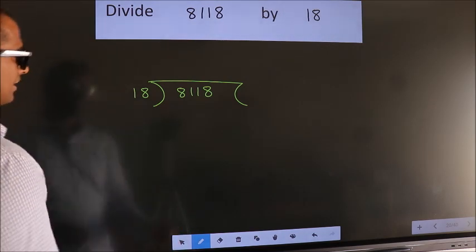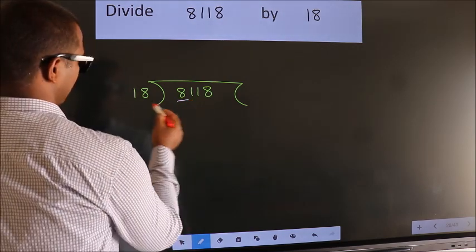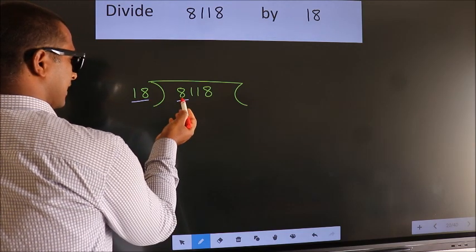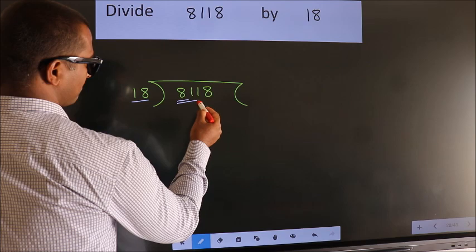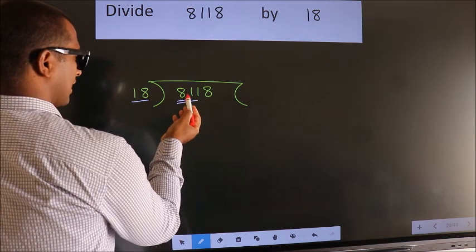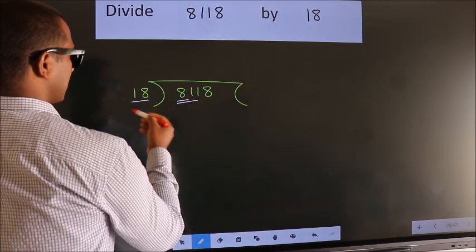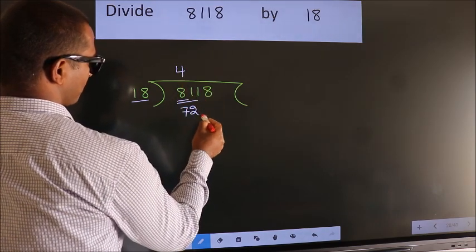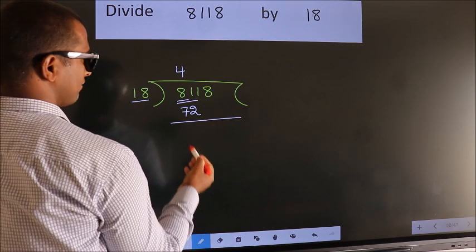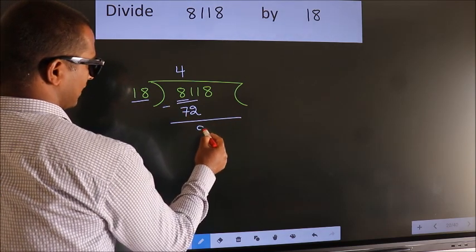Next. Here we have 8. Here 18. 8 smaller than 18, so we should take 2 numbers, 81. A number close to 81 in 18 table is 18 times 4, 72. Now we should subtract. We get 9.